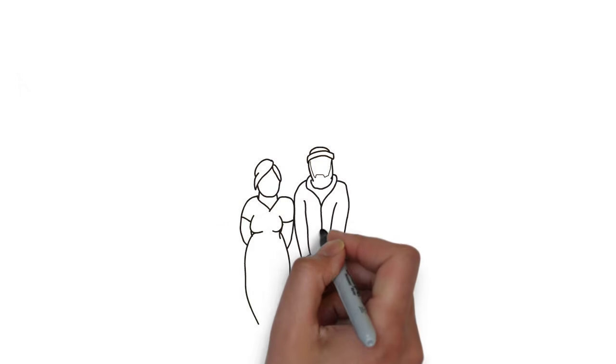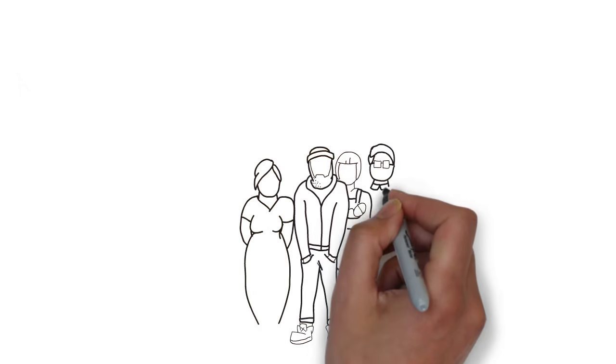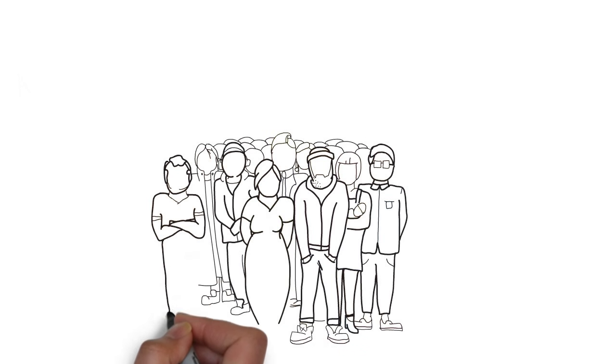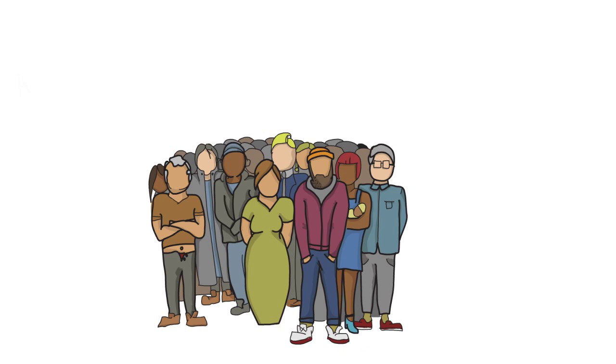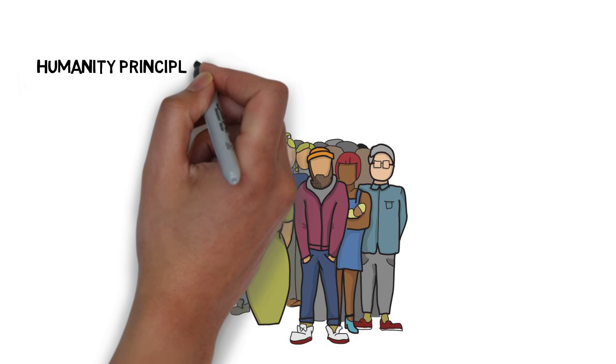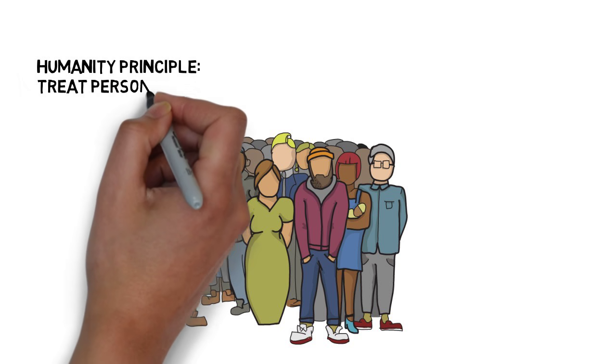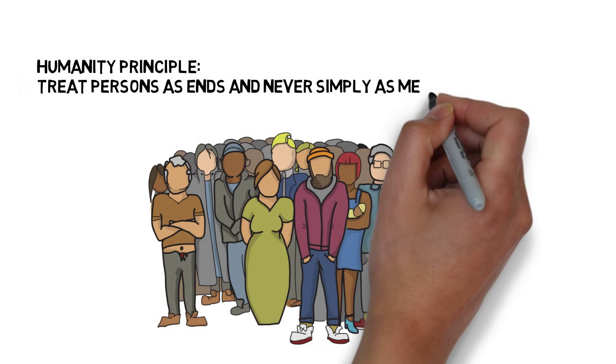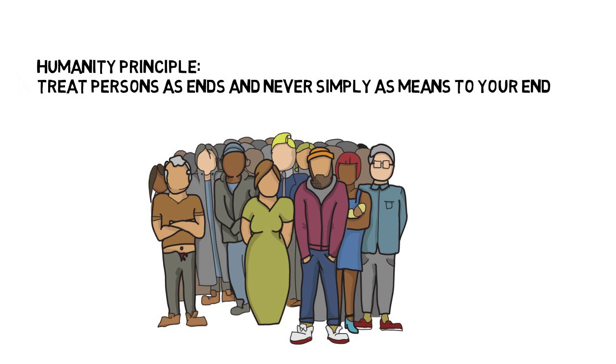Kant believed that in addition to this first test, there was another way to test whether a given action is in accord with or a violation of a moral duty. Kant formulates this test as follows: Act in such a way that you treat humanity, whether in your own person or in the person of another, always at the same time as an end and never simply as a means.